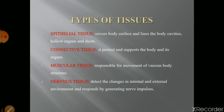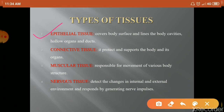The definition of tissue relates to four main types: epithelial tissue, connective tissue, muscular tissue, and nervous tissue.